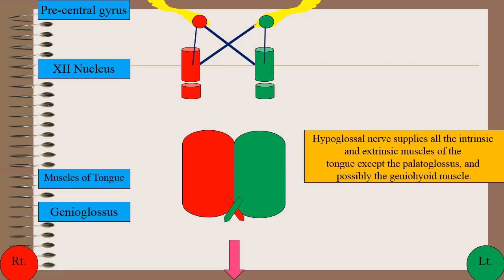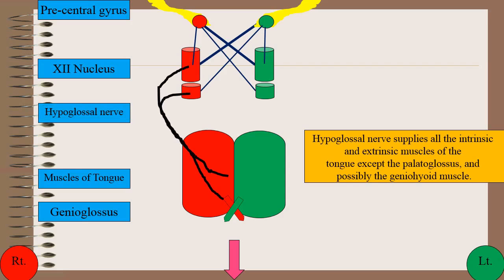The upper motor neuron innervation for all the intrinsic and extrinsic muscles of the tongue is predominantly bilateral, and the upper motor neuron innervation for the genioglossus muscle is primarily crossed. The hypoglossal nerve on the right side supplies all intrinsic and extrinsic muscles on the right side, and the left-sided hypoglossal nerve supplies all the intrinsic and extrinsic muscles on the left side.